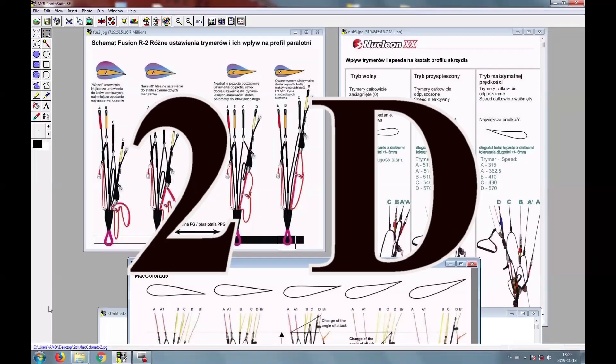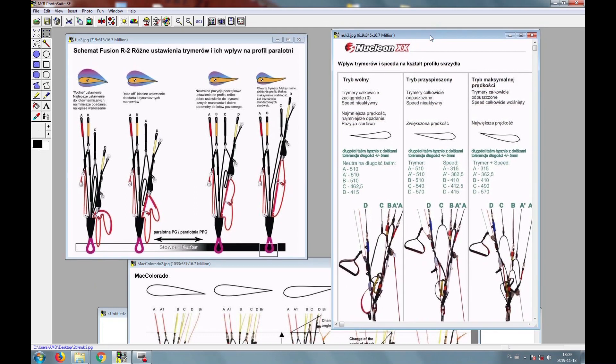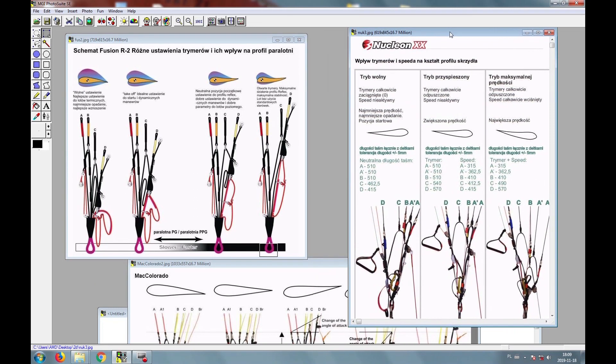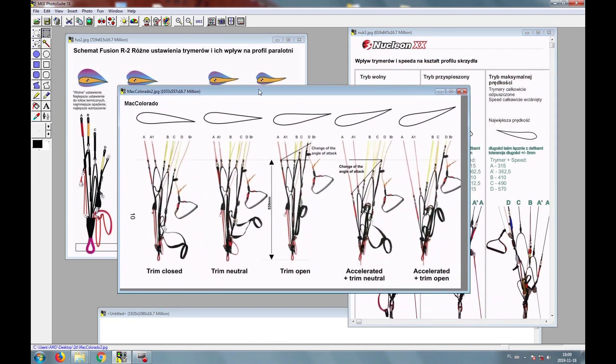To show you the most true way how the 2D steering is working, or rather I would say not working, I would show you an example of three paraglider producers. We have Fusion of Palomania, Nucleon of Dudek, and Mac Colorado from Mac Paragliding.